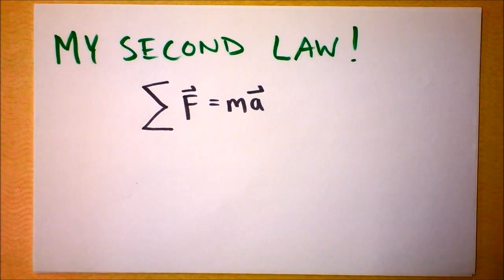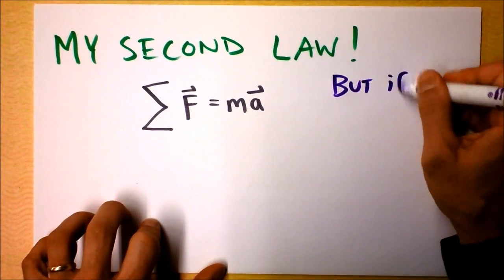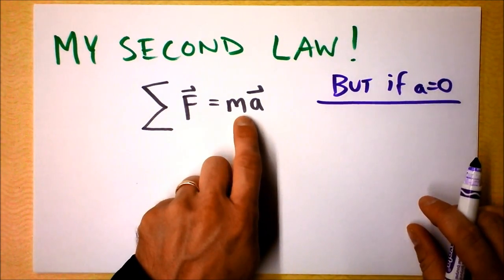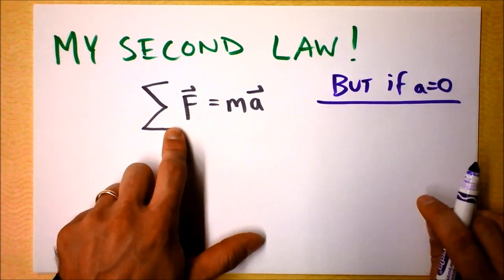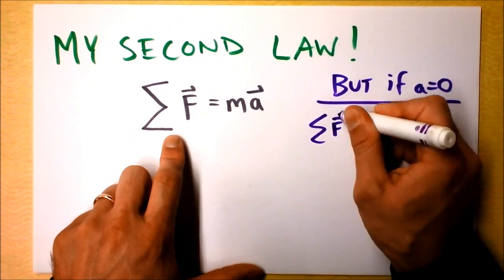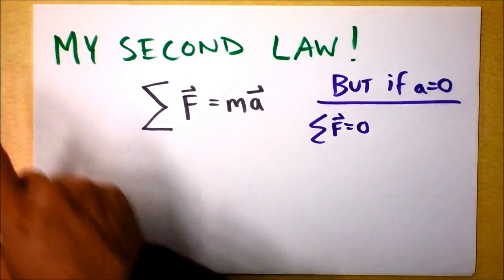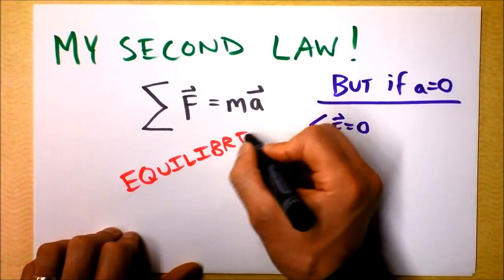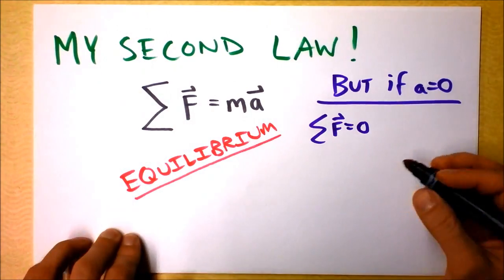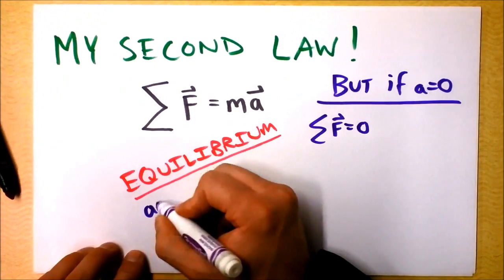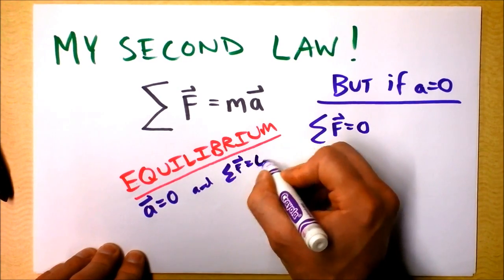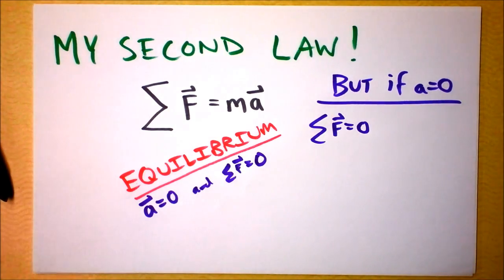Net force is mass times acceleration, and I want to start talking about what if stuff is not accelerating. If A equals zero, then whatever your mass is, if A is zero, your net force has to be zero. So if A is zero, then net force is also zero, and I'm going to call this equilibrium. Put this in a box in your notes. Equilibrium is the state of having A equals zero and net force equals zero, and that's because net force is mass times acceleration, so those have to both be true at the same time.